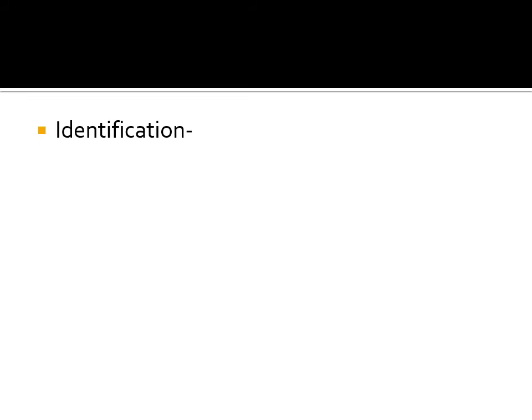To differentiate from Mycobacterium tuberculosis complex, the MPT64 antigen immunochromatographic test is used — MPT64 is a marker for tuberculosis complex infection. Biochemical tests such as nitrate test, niacin test, and arylsulfatase test also help differentiate these groups. Newer preferred methods include MALDI-TOF — matrix-assisted laser desorption ionization time-of-flight — and molecular methods, which allow easier species identification and differentiation from M. tuberculosis.